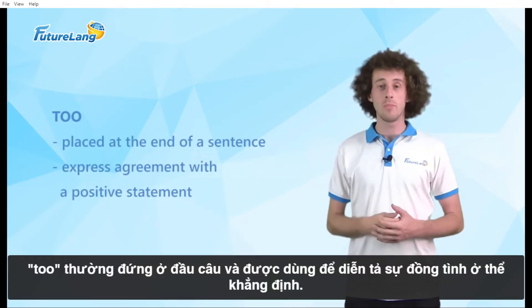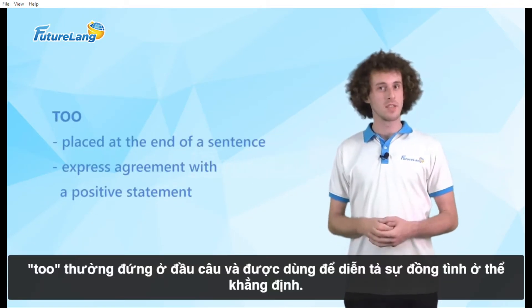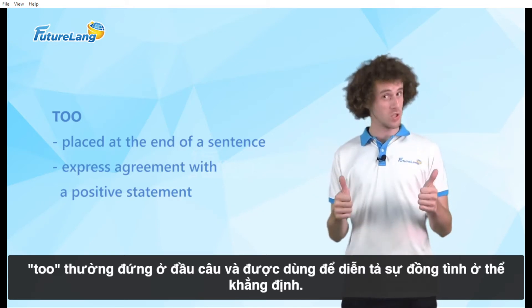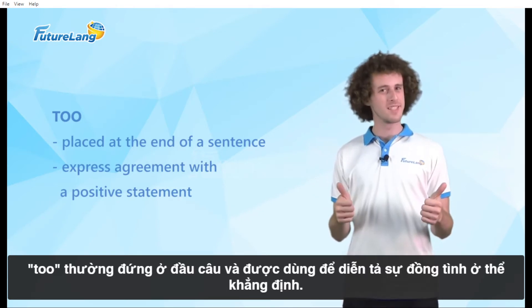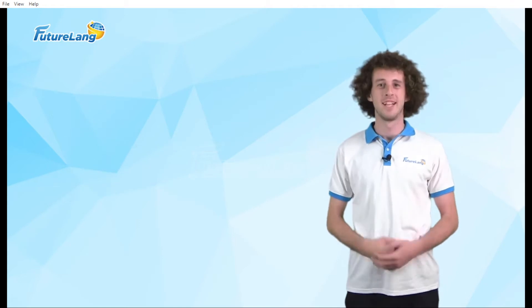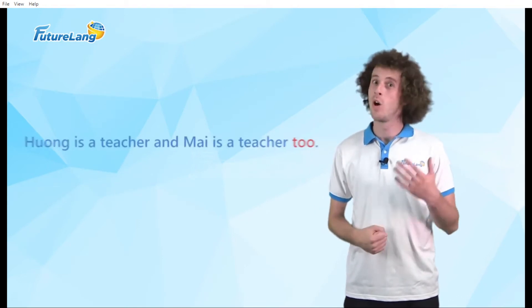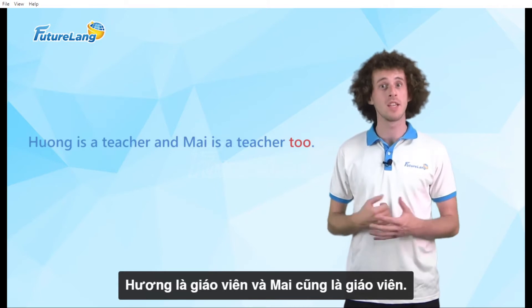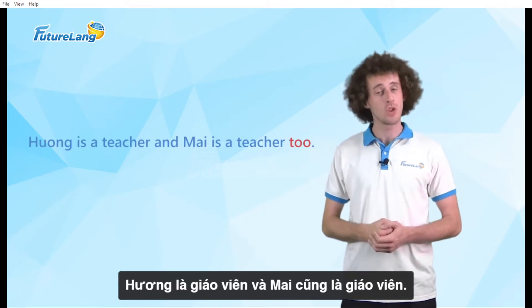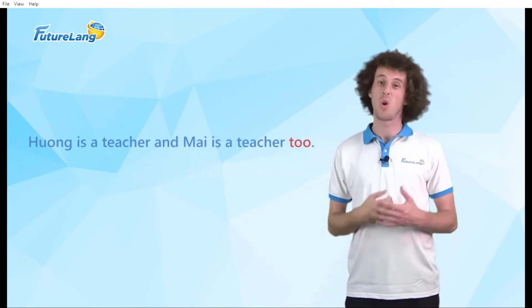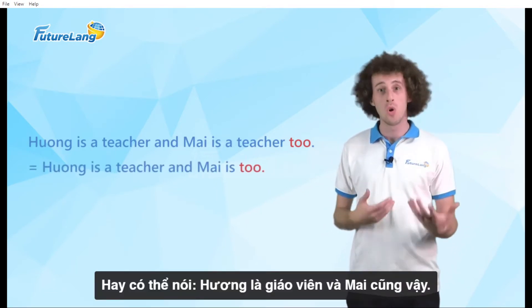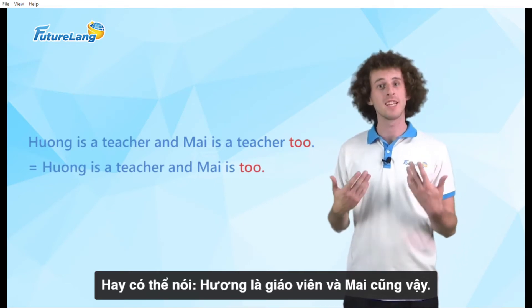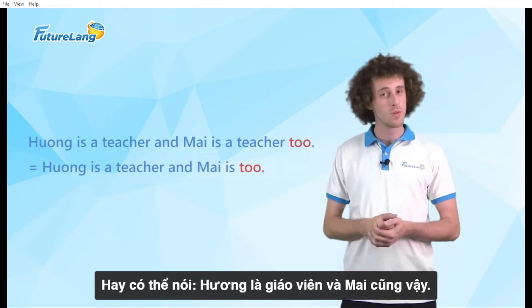'Too' is often placed at the end of a sentence and expresses agreement with a positive statement. For example: 'Huang is a teacher and My is a teacher too.' Or we can say: 'Huang is a teacher and My is too.'